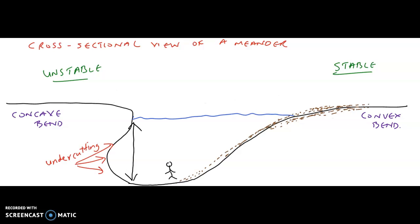Now, if I'm a fisherman going fishing — throwing a line, maybe catching some fish — I would relax on a rock here and try to throw my line in this particular region, because I can actually stand here, rest my cooler here, whatever the case may be. The fact of the matter is that I am stable on the convex bank. But if I'm standing on the concave bank side, because of undercutting taking place, this area is said to be very unstable — this piece of rock can potentially be fractured and dropped into the riverbed.